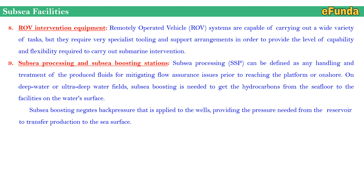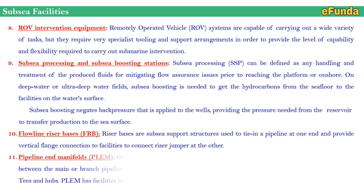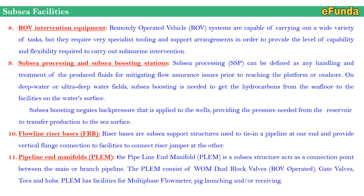On deep water or ultra-deep water fields, subsea boosting is needed to get hydrocarbons from the seafloor to surface facilities. Subsea boosting negates back pressure applied to the wells, providing the pressure needed from the reservoir to transfer production to the sea surface. Tenth, flow line riser bases (FRB) — riser bases are subsea support structures used to tie in a pipeline at one end and provide a vertical flange connection to connect the riser jumper at the other end. Eleventh, pipeline end manifold (PLEM) — a subsea structure acting as a connection point between the main or branch pipeline.